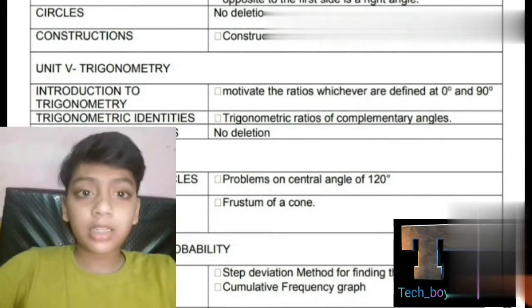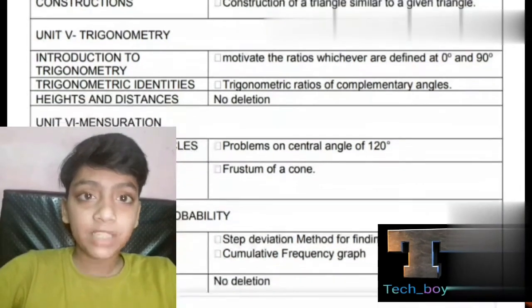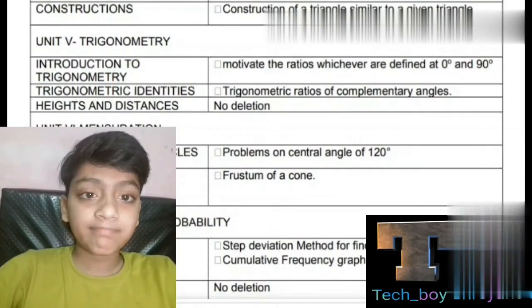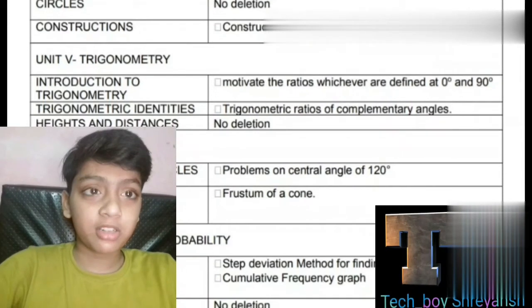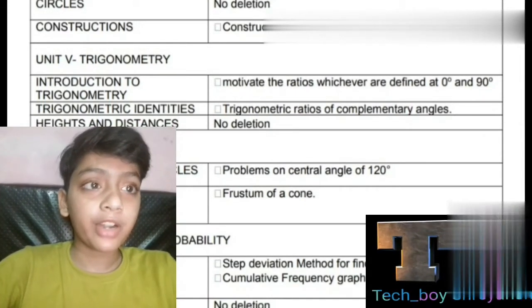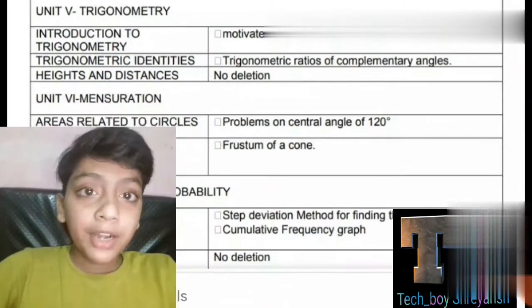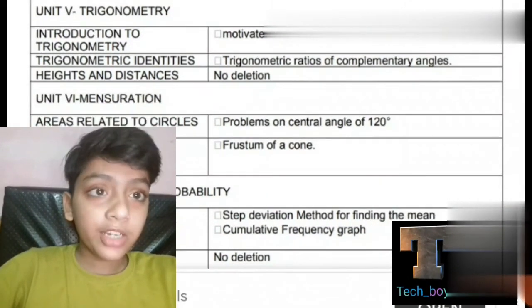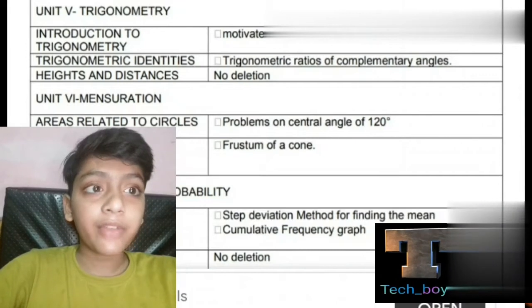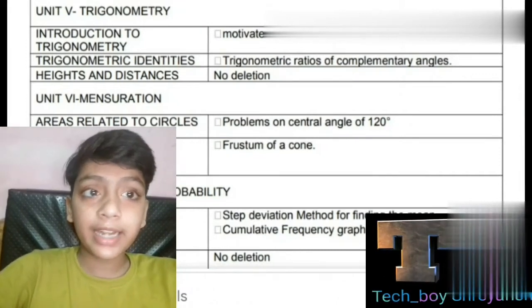In constructions, construction of a triangle similar to a given triangle is deleted. In introduction to trigonometry, the ratios defined at 0 degrees and 90 degrees are deleted.